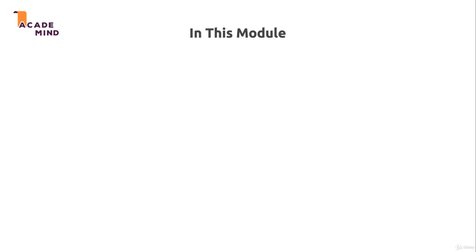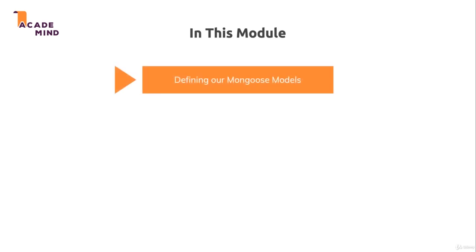In this module, we'll have a look at how we can define our Mongoose models. Because Mongoose is all about models, this means we will have to create a place model and a user model. Both models will define the general structure of the so-called documents stored in our MongoDB database.